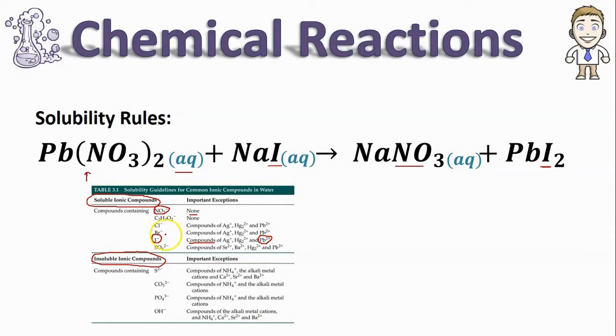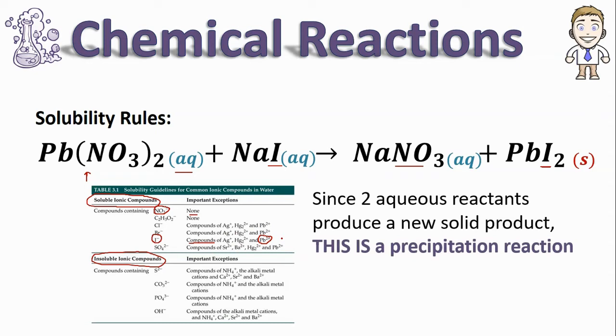That means even though I minus is usually soluble, it's not soluble with these three. So my PbI2 product will not dissolve in water and I can label it with an s for solid.